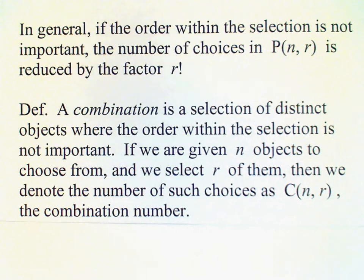A combination is a selection of distinct objects where the order within the selection is not important. If we're given n objects to choose from and we select r of them, then the number of these choices C(n, r) is the combination number.